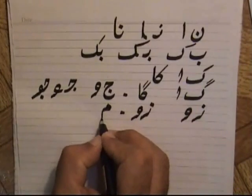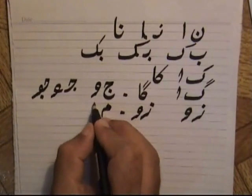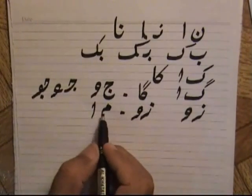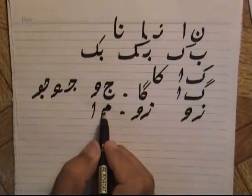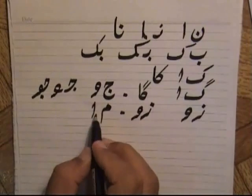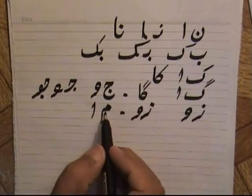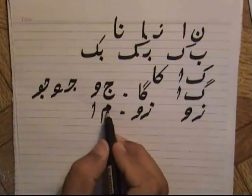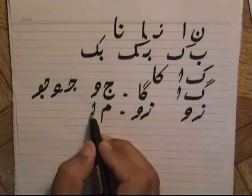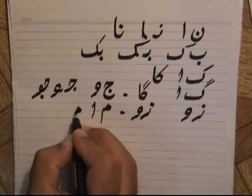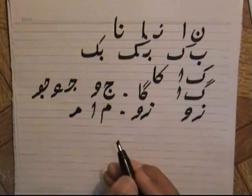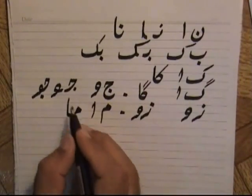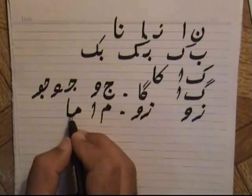There is one sound meem and one alif. Meem is a connector and alif is a non-connector. So meem takes the initial position and alif takes the final position: meem-alif, 'ma'.